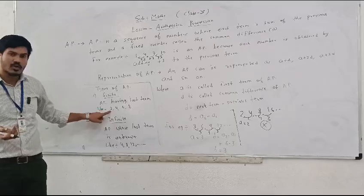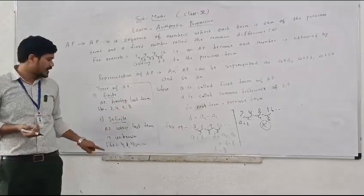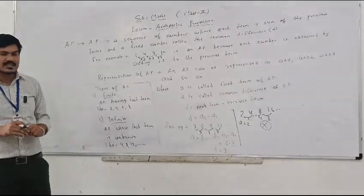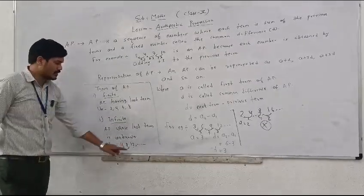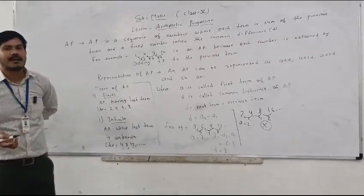For example, we have 2, 4, 6, 8, so the last term is 8. This is finite AP. Second is infinite AP, in which the last term we do not know. For example, the AP 4, 8, 12, dot dot means the last term we do not know, so it is known as infinite AP.